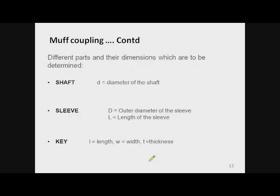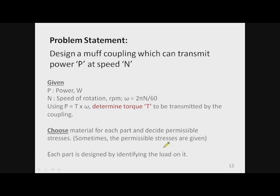As discussed, there are three parts in the muff coupling: shaft, sleeve, and key. Through the design procedure we have to obtain the various dimensions: diameter of shaft, outer diameter of sleeve or muff, length of sleeve or muff, and different dimensions of the key.